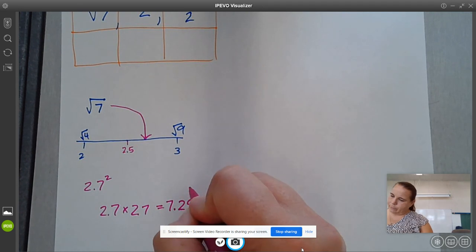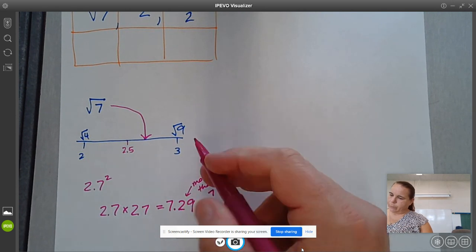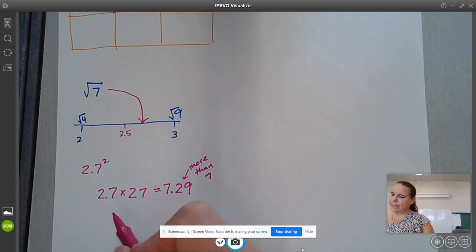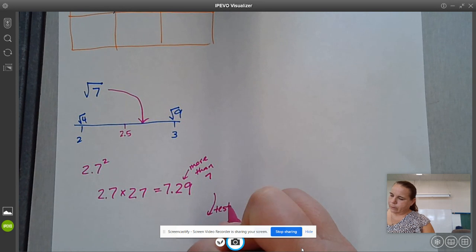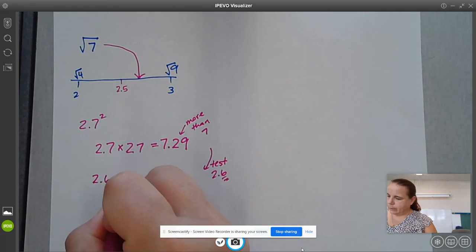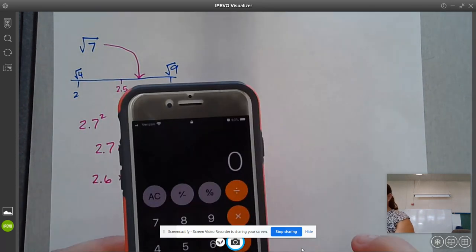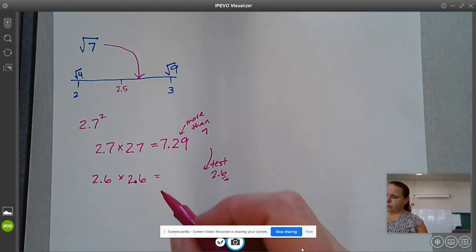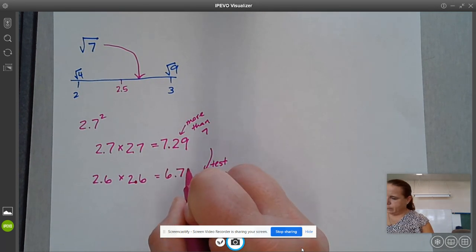Since this is more than 7 and we're looking for the square root of 7, I'm going to go down. I'm going to test 2.6, go down one tenth and just see where that takes me. 2.6 times 2.6, that is 6.76.